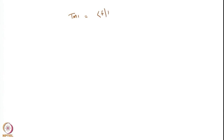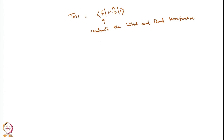One interesting thing is that we still need to evaluate the initial and final wave functions in the transition moment integral TMI = ⟨f|μ·ε|i⟩. Throughout the course, we have assumed a Hamiltonian H₀ such that H₀|i⟩ = Eᵢ|i⟩ and H₀|f⟩ = Ef|f⟩, but we still do not know what H₀ precisely is.